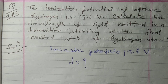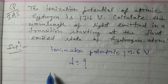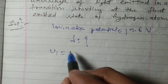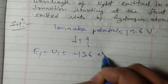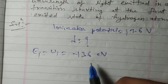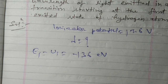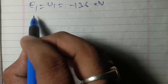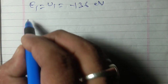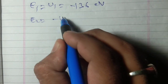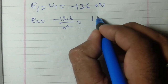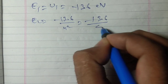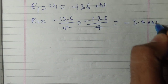We already know that the energy of the electron in the first orbit: E1 equals minus 13.6 electron volt. This is the ground state energy of the hydrogen atom. And for the second energy level, E2 equals minus 13.6 upon n² = minus 13.6 upon 4, which equals minus 3.4 electron